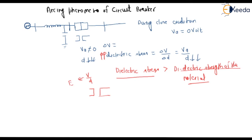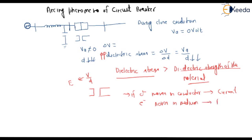When the contact separates, there is a voltage difference between them and there is a distance D. The electric field energizes the electrons here, so when a greater number of electrons are present and moving in the medium, arcing will start. If electrons move in a conductor, that is called current. But when electrons move in a medium, that is called arcing — provided dielectric stress is greater than dielectric strength of the material. This is how arc is initiated in the circuit breaker, due to electric emission theory.